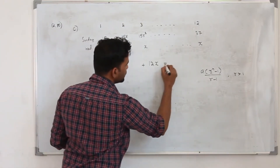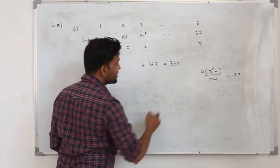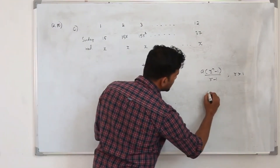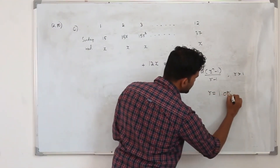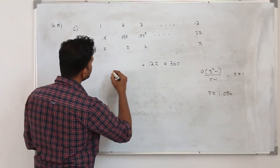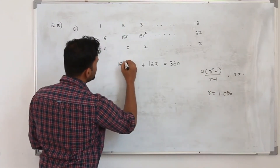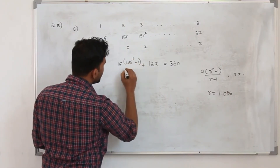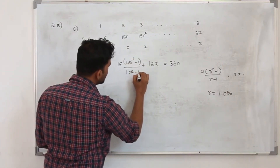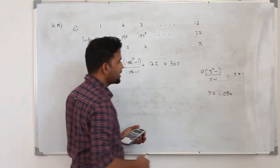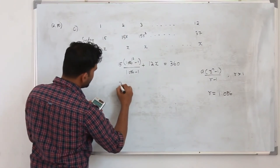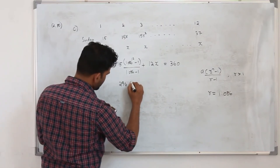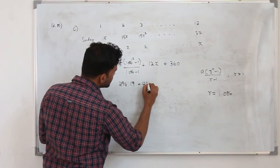The sum of the geometric series plus 12x must not exceed 360 km — that's the maximum total distance. Using r approximately 1.086, the sum of 12 Sunday terms works out to approximately 294.185. So 294.185 plus 12x equals 360, giving 12x approximately equal to 65.815.